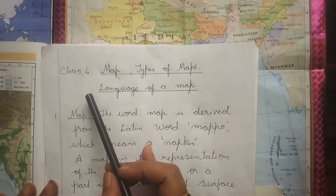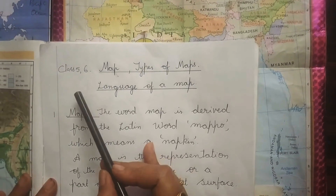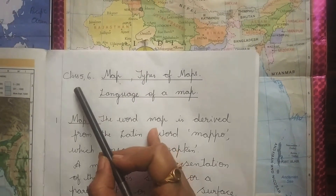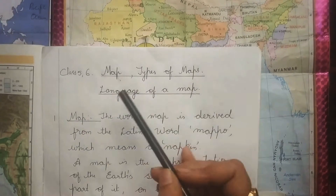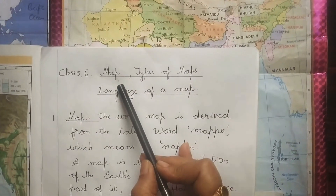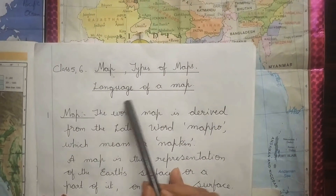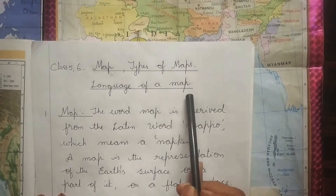Good morning children. Today's topic for class 5 and 6 is map, types of maps, and language of a map.